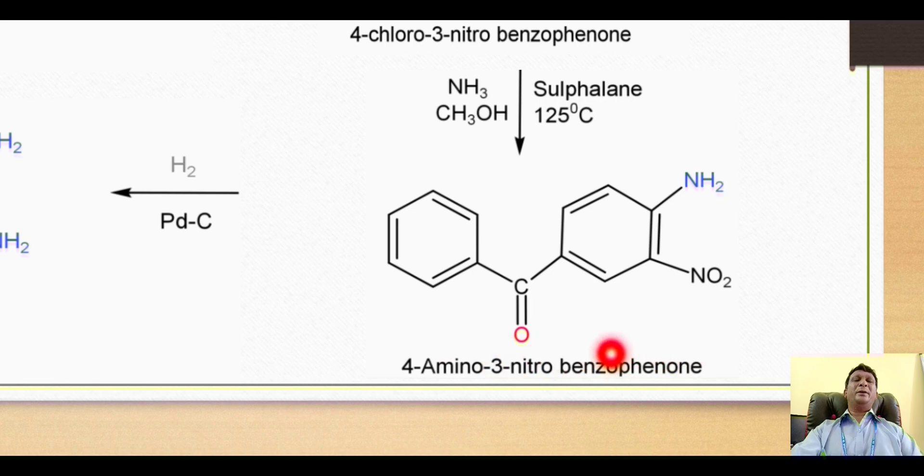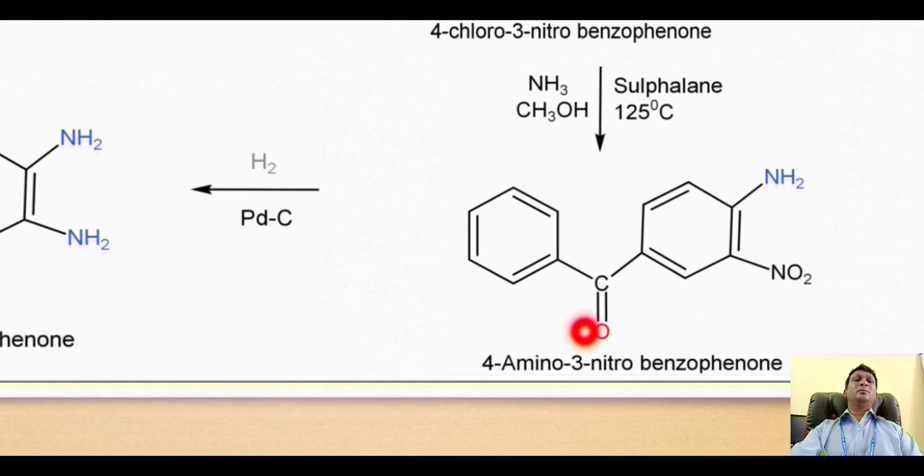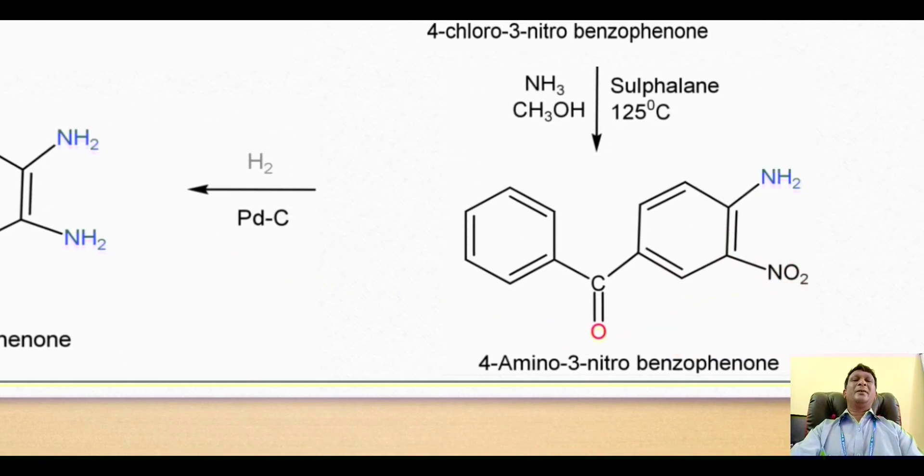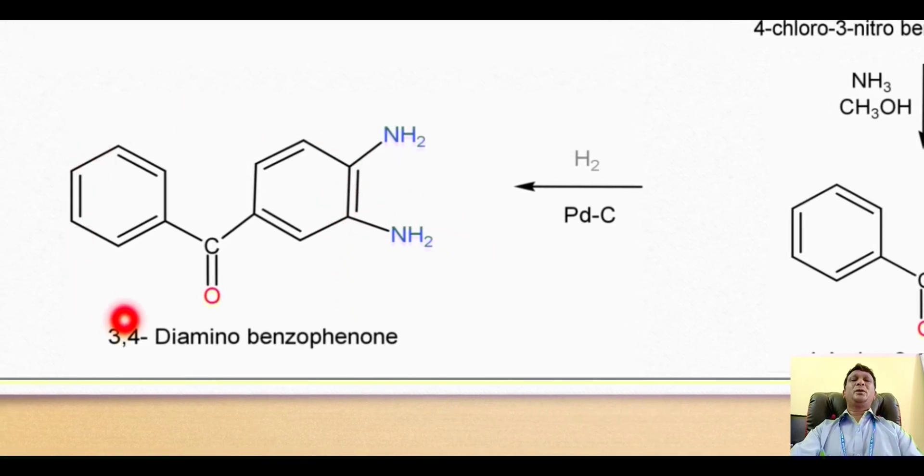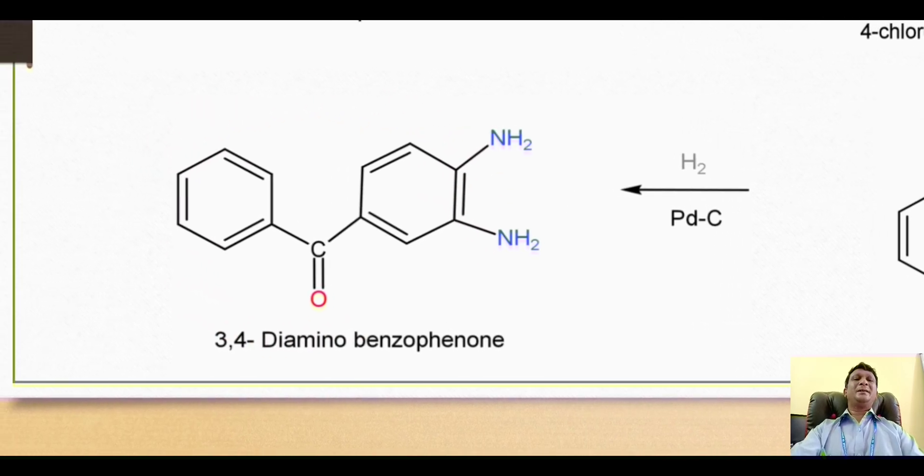This nitro derivative then undergoes the classical reduction reaction in presence of palladium and carbon, so the nitro group gets reduced to corresponding amino group. This gives formation of 3,4-diamino-benzophenone. So dear students, that is the synthesis of the first part.